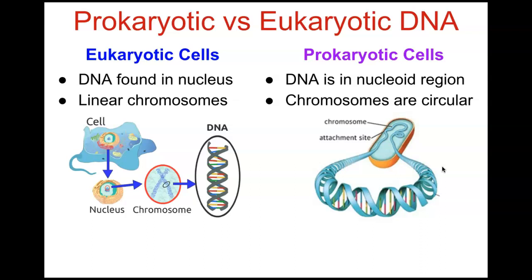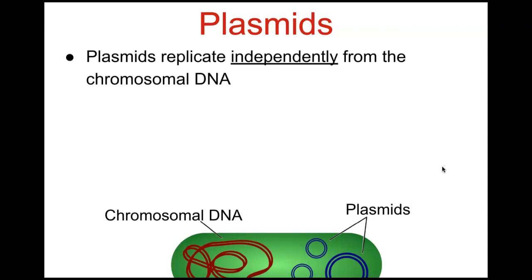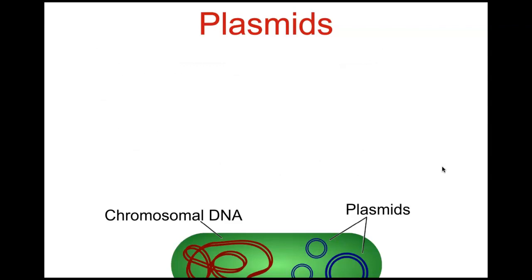Our two prokaryotic kingdoms are Archaea and Eubacteria. Prokaryotes and some eukaryotes also contain small circular pieces of DNA called plasmids — small circular DNA molecules that are separate from the chromosomes. Plasmids replicate independently from chromosomal DNA and are primarily found in prokaryotic organisms. They contain genes that may be useful to the prokaryote in a particular environment but may not be required for survival.